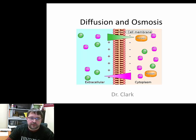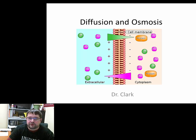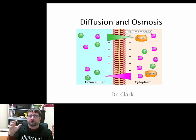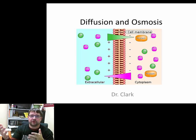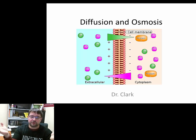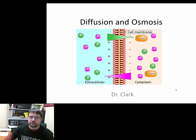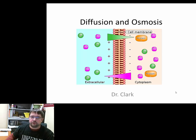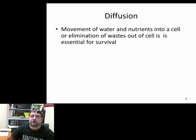Dr. Clark here again with a biology lecture on diffusion and osmosis. We're going to talk about these two general processes and a few others like active transport and phagocytosis. Really, this section is about how cells regulate what comes in and out of the cytoplasm — molecule movement, as opposed to the cellular movement we were discussing before.